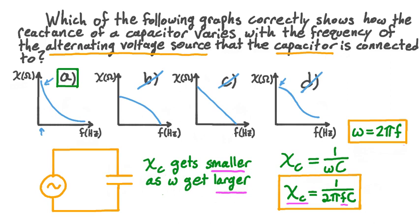It turns out we actually didn't need to analyze all these graphs in detail to get this answer. Both our qualitative and quantitative relationships between reactance and frequency tell us that reactance and frequency are inversely proportional. This means that as one gets larger the other gets smaller, and vice versa. A graph showing the relationship between two inversely proportional quantities always has the same basic shape, and that's the shape of the graph in A.